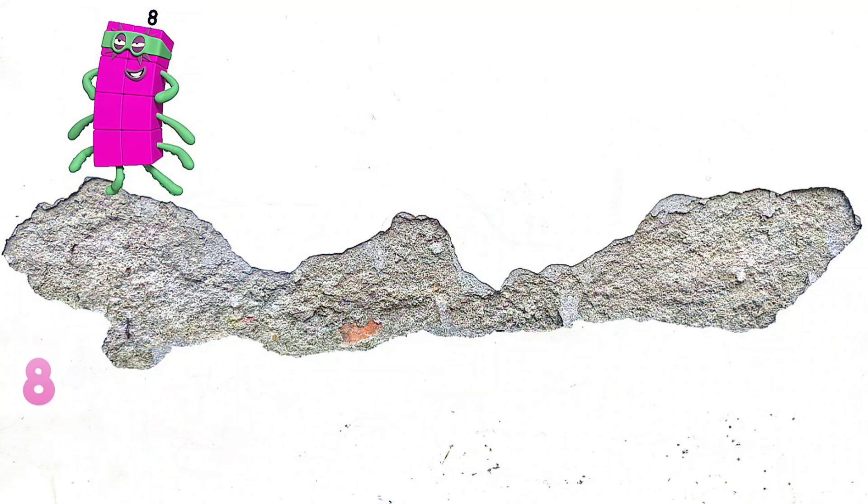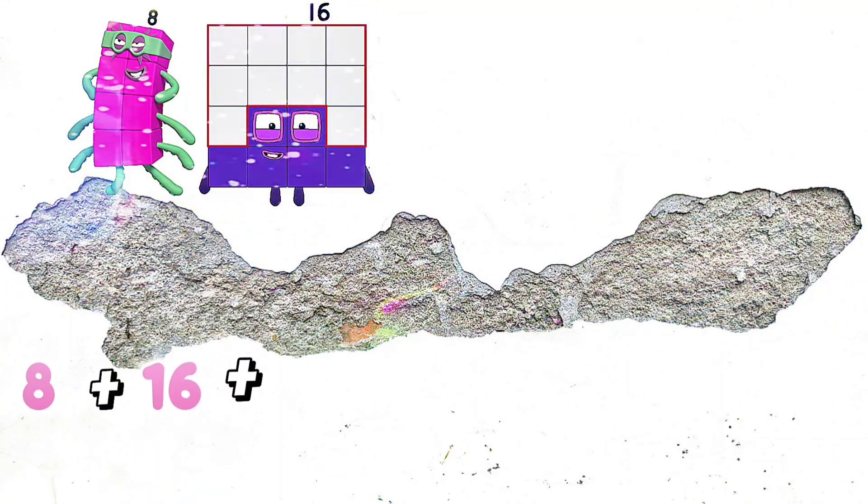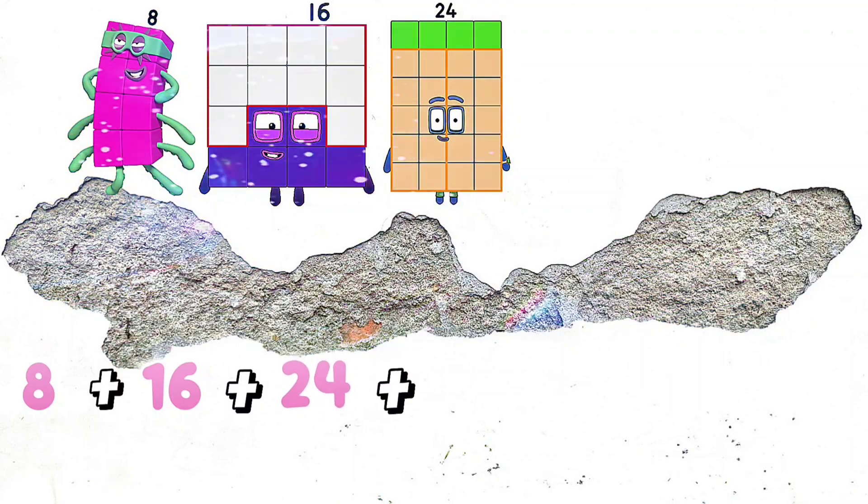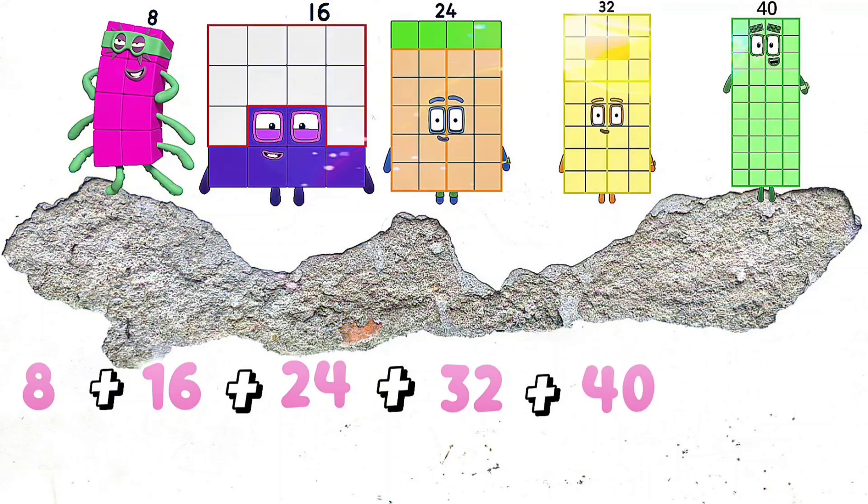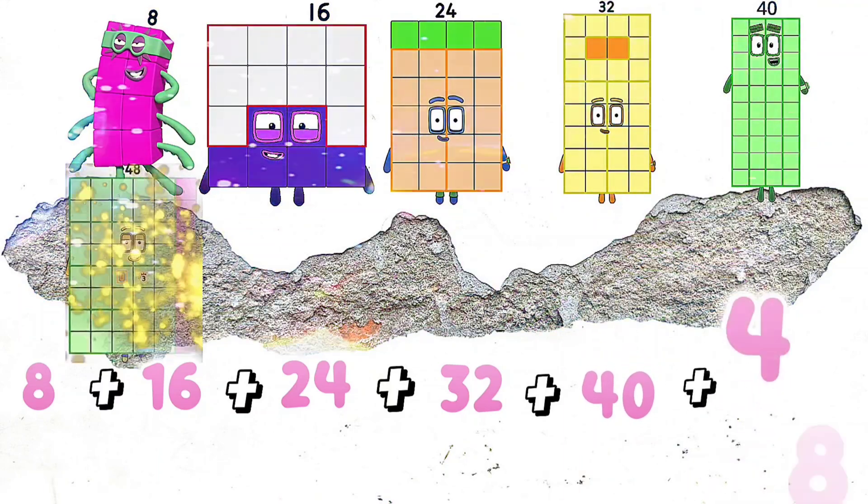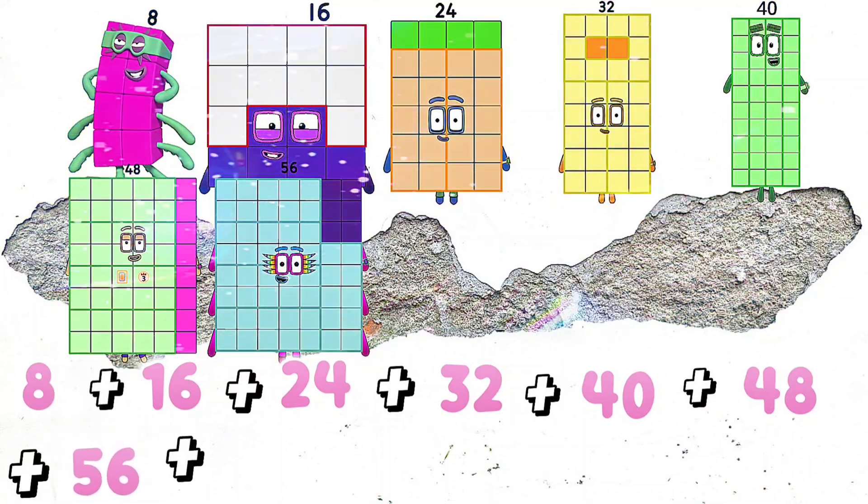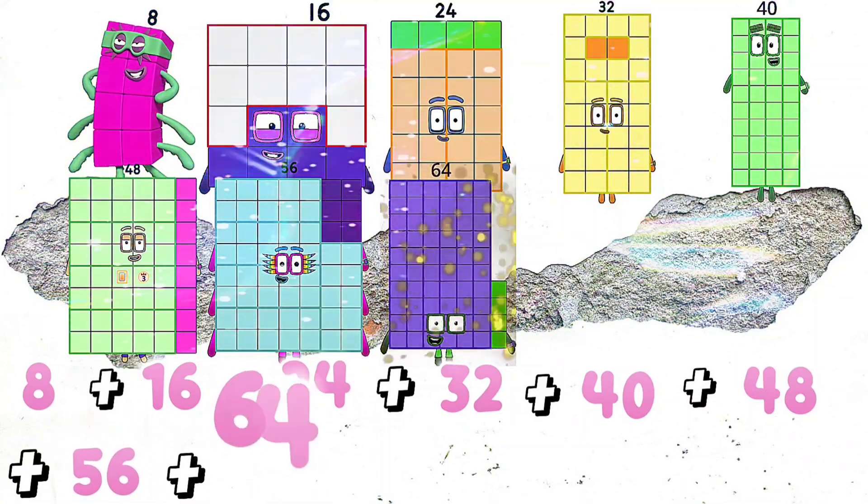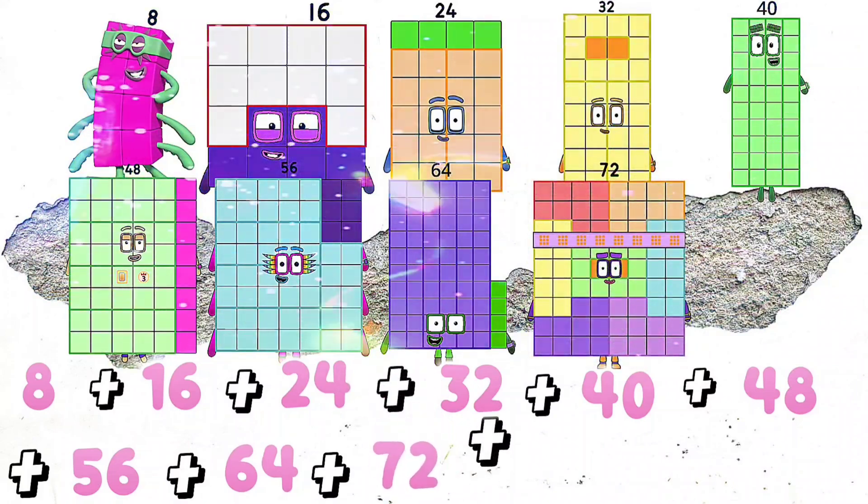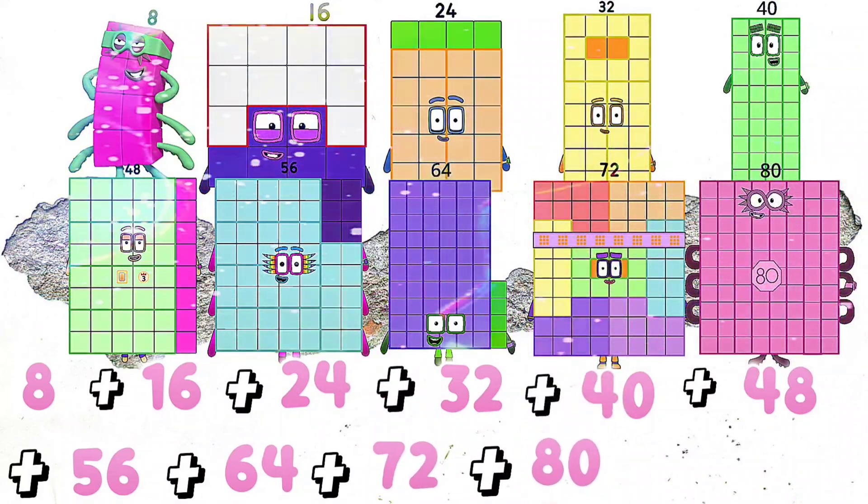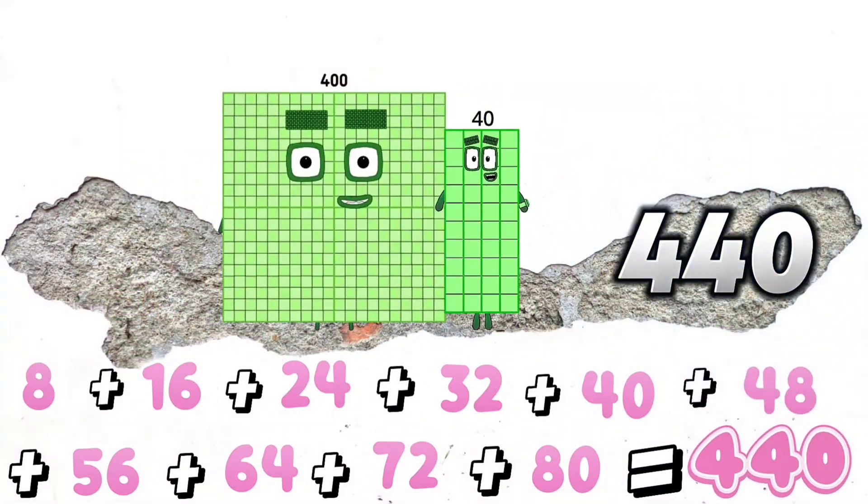8 plus 16 plus 24 plus 32 plus 40 plus 48 plus 56 plus 64 plus 72 plus 80 equals 440.